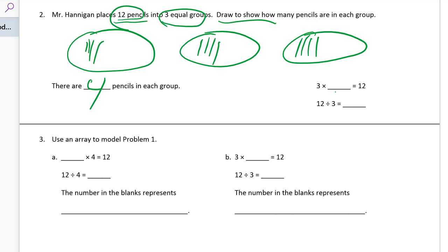And here's our missing factor or unknown factor in a multiplication equation. And it's the same as our quotient here in our division equation. It's 4 pencils.